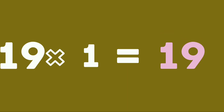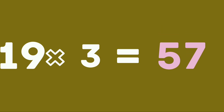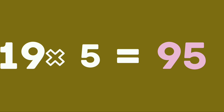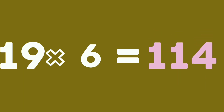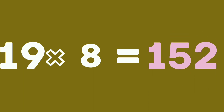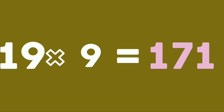19×1 are 19. 19×2 are 38. 19×3 are 57. 19×4 are 76. 19×5 are 95. 19×6 are 114. 19×7 are 133. 19×8 are 152. 19×9 are 171. 19×10 are 190.